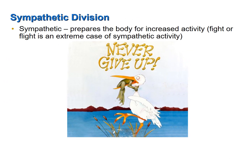The sympathetic division prepares the body for elevated activity to deal with a stressor — illustrated by a frog fighting off a bird. Typical responses include increased heart rate, blood pressure, and respiration rate; increased sweat gland activity; pupil dilation for far vision; and rising blood glucose. Blood vessels to the skin, intestinal tract, and genitalia constrict, while blood vessels to skeletal muscles, the heart, and the central nervous system dilate.